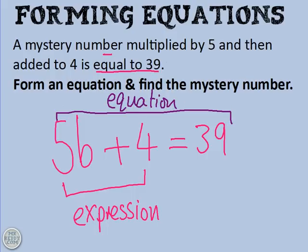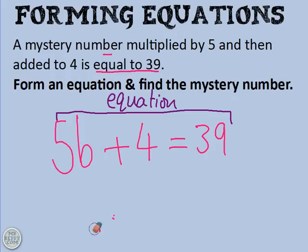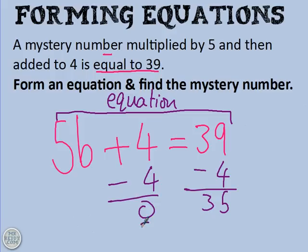And we can solve that. That's easy. We've solved equations like this before, not too difficult. Where do I start? I start by subtracting 4 from both sides on this one. So you get 35 here, you get 0 there, you get a new equation now, 5B equals 35. And you can carry on solving from there. I'm not going to finish that one off for you, that's for a different video.